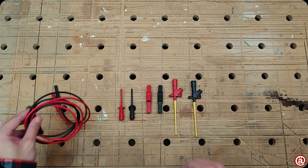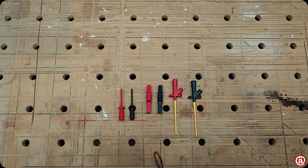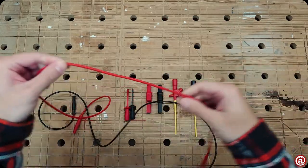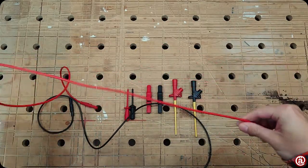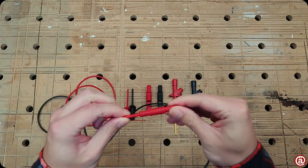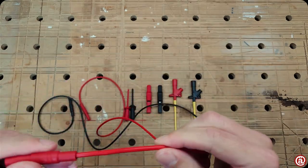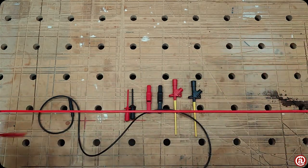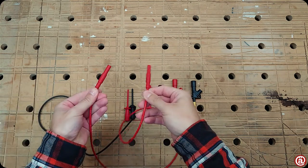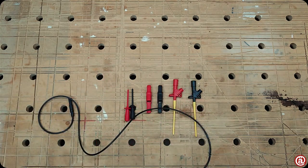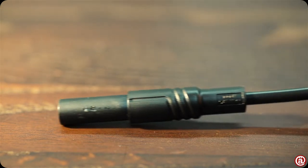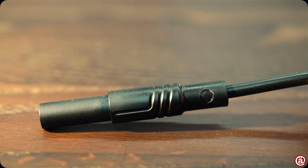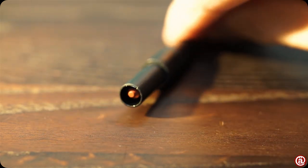Last but not least we have the test leads. 1000V, 16A, CAT 3 rating, 1m long, highly flexible, double isolated with a color coating to see damages quickly. And the best thing is that these step resistant plugs are insulated and safe to touch after IEC 61010.